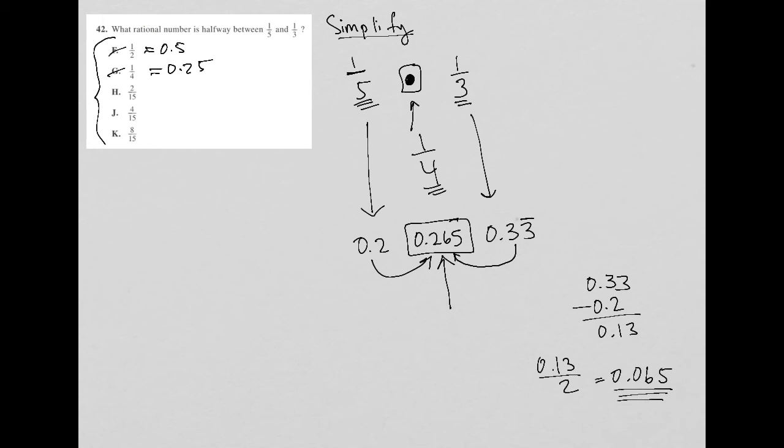2 fifteenths, right? So here's an example of not really understanding fractions mentally, at least for me. Maybe you do. But I don't really know what 2 fifteenths is as a decimal. So if I divide 2 divided by 15, that ends up being 0.13. So that's gone.